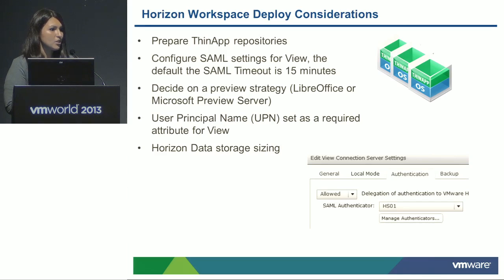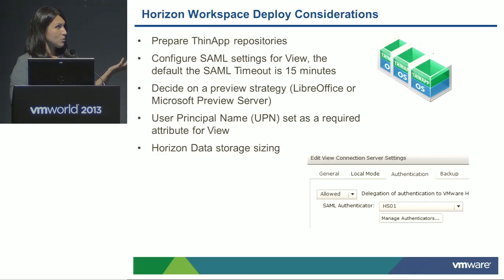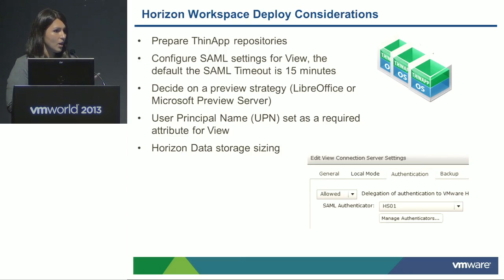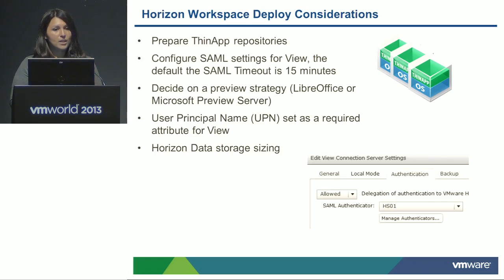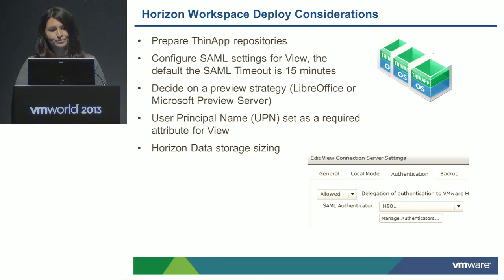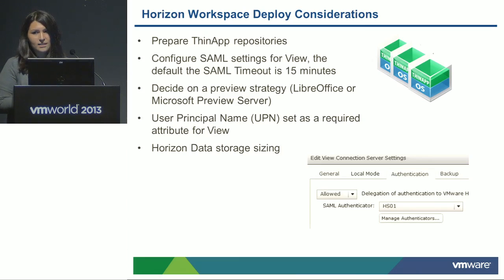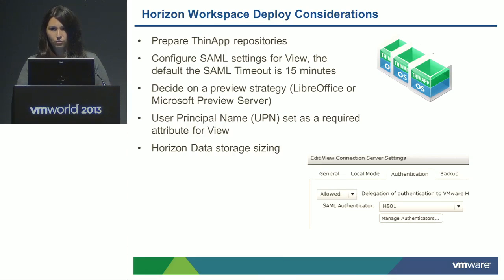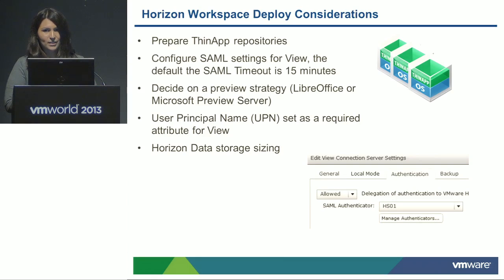One big thing that comes up is the global timeout in View, which defaults to 15 minutes. If users are logged into Workspace for a long time and then click through to their desktop, they may not get SSO'd into their desktop due to the timeout. Set the timeout to whatever length of time is appropriate for your security profile. For preview strategy, Workspace supports document preview — you can use LibreOffice which is open source, or set up a Microsoft preview server on the Data VA. When connecting with View, make sure in Horizon Workspace you set the UPN as a required attribute, otherwise this will break your SSO.